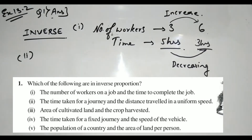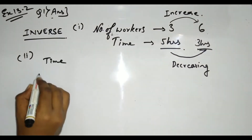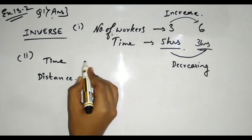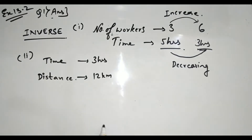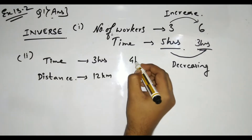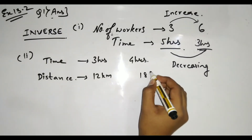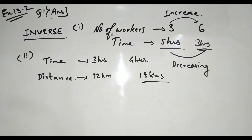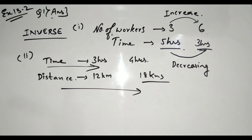Moving on to the second part: time taken for a journey and the distance traveled at uniform speed. Suppose time is 3 hours and they can cover 12 kilometers. If the time increases to 4 hours, the distance will also increase — say 18 kilometers. Both quantities are increasing, so it is direct proportion.